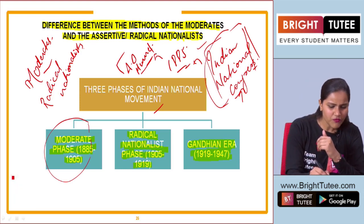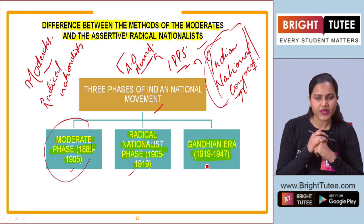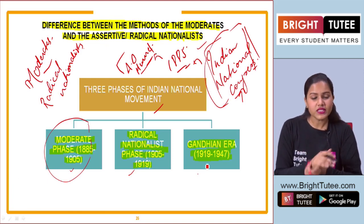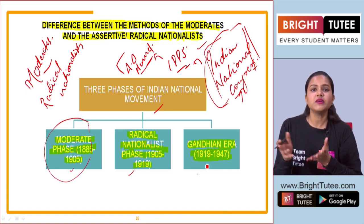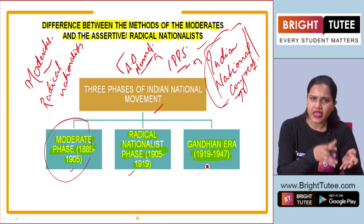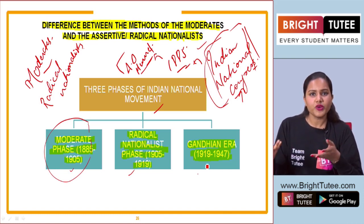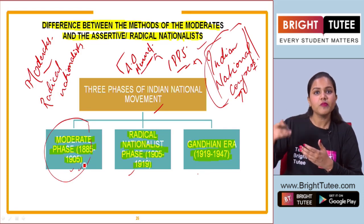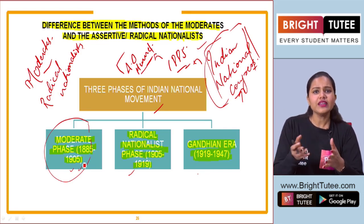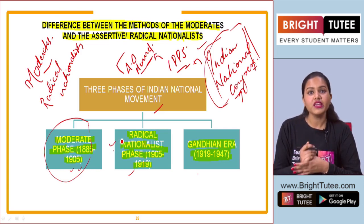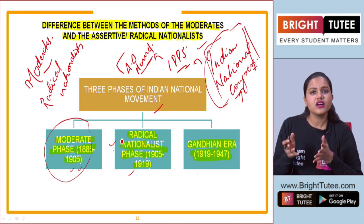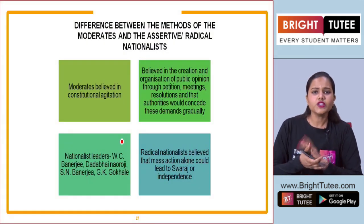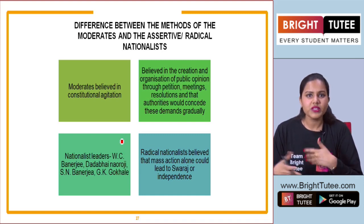We will focus on all these phases one by one. Why are we distinguishing these phases? Because in all these phases there were important leaders with certain political ideas according to which they worked. When we talk about the moderate phase, we refer to moderate leaders who had a very different mindset from that of the radical or assertive nationalist leaders.